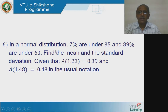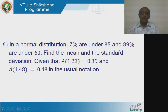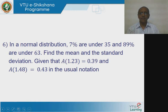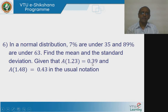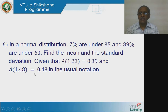Next question. In a normal distribution, 7% are under 35 and 89% are under 63. Find the mean and standard deviation, given that A(1.23) = 0.39, meaning the area between z = 0 and z = 1.23 is 0.39, and the area between z = 0 and z = 1.48 is 0.43 in the usual notation.